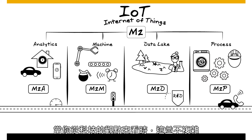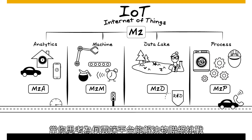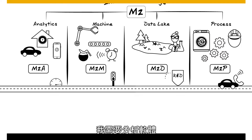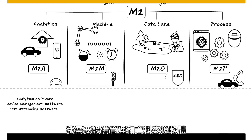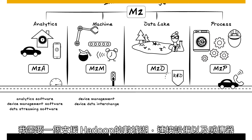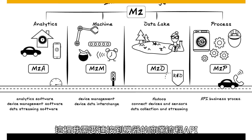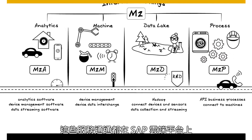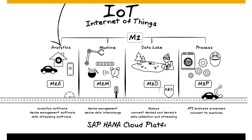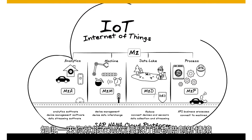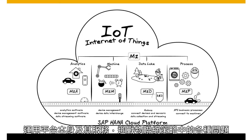When you look at why you need a cloud platform to solve IoT challenges, it comes back to the technology baggage: I need analytics software, device management software, data streaming software, device data interchange, a data lake with Hadoop for devices and data collection, and APIs for business processes connecting to machines. You can deliver all of these as services on a cloud platform, making it easy to solve any individual IoT problem.